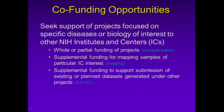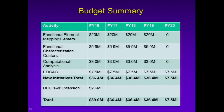Those are the four initiatives. I want to point out a couple of places where we seek opportunity for co-funding. We plan to work with colleagues in other institutes to seek support for projects focused on specific diseases or biology of interest. We can imagine either whole or partial funding of projects, especially under the functional characterization initiative, supplemental funding for mapping of samples of particular interest to an institute, and opportunity for supplemental funding to support submission of existing or planned data generated under other projects directly to the EDCAC.